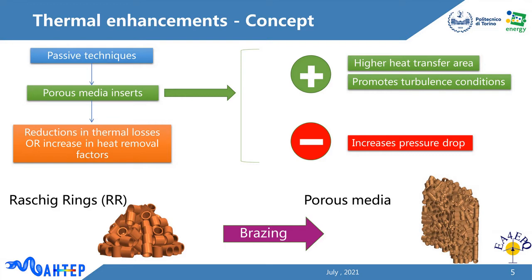Thermal enhancement techniques can be carried out through passive or active methods. In the active method, an external energy source is required to, for example, produce a turbulent regime and enhance the heat transfer coefficient. However, in passive methods, no external energy is used and the heat transfer mechanism is improved with only internal effects. The integration of porous media with solar receivers is a passive method to increase the heat transfer area between the working fluid and the absorber, as well as breaking the thermal boundary layers through recirculation. Although these are two important positive consequences, the rise in pressure drop due to high friction between the fluid and porous media could be a sore point.